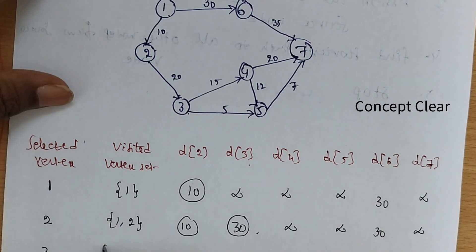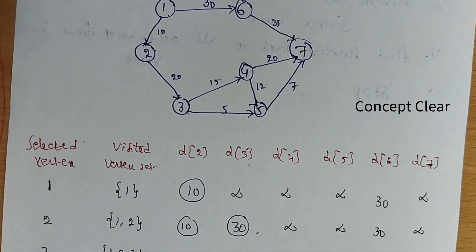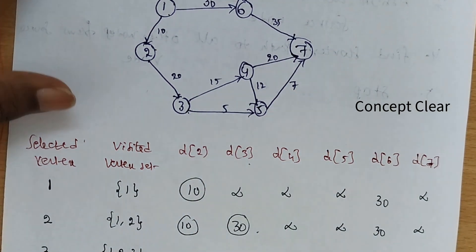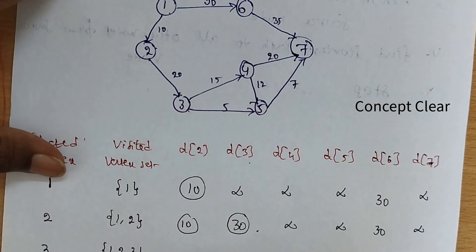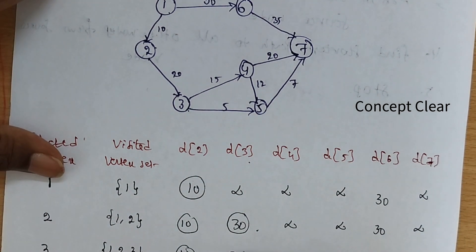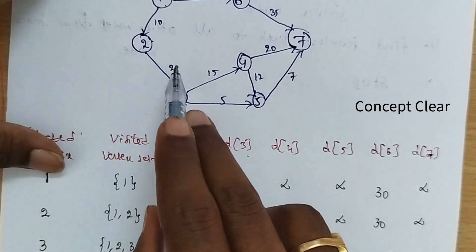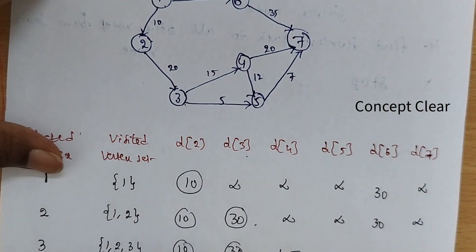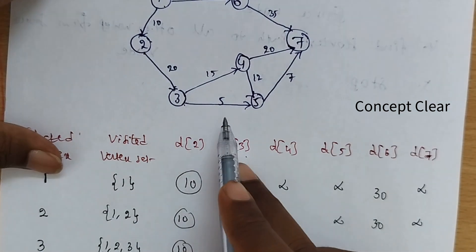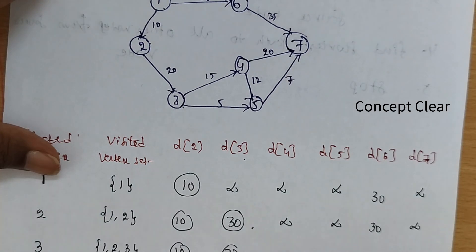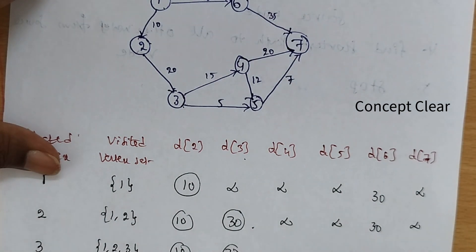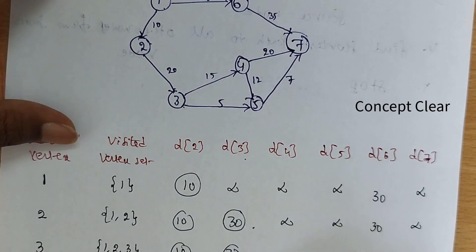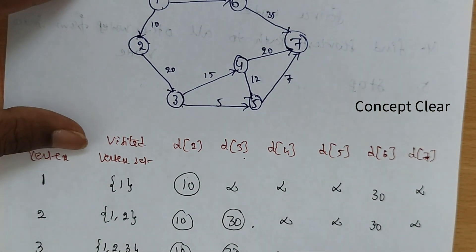Next, we are selecting the vertex 3. Visited are 1, 2, 3. The possibilities from vertex 3 are: 3 to 4 and 3 to 5. The cost to vertex 4 is 10 plus 20 plus 15, which equals 45. The cost to vertex 5 is 10 plus 20 plus 5, which equals 35. Already vertex 6 has cost 30, and the last one is infinity. Among these, the least value is 30, so we select vertex 6.